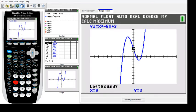Move the cursor to the left, past the maximum. It's asking for the left bound, so approximate it at about negative 1.66667.